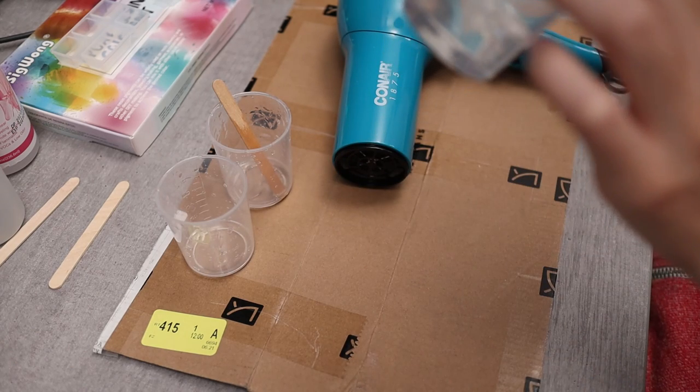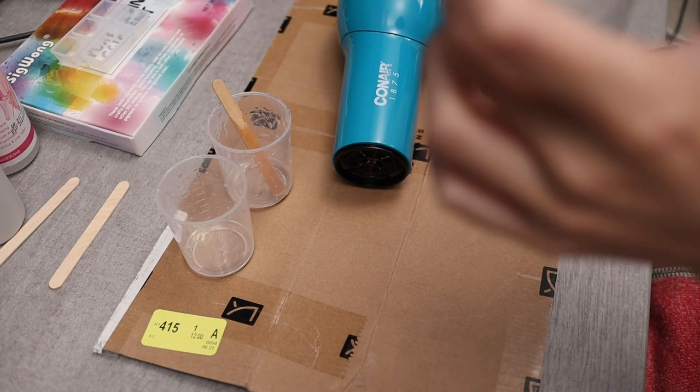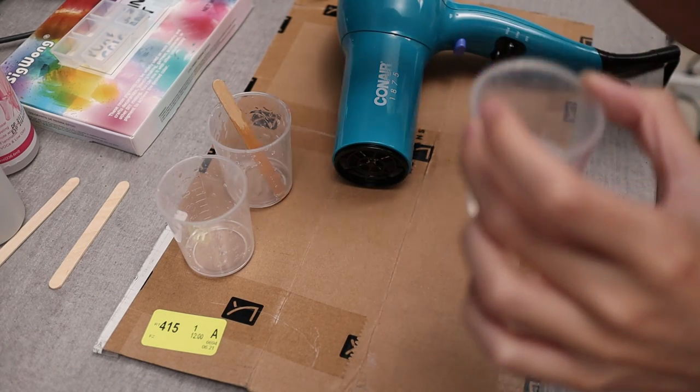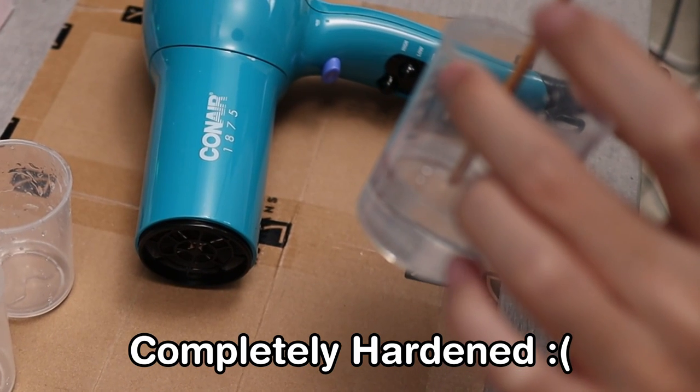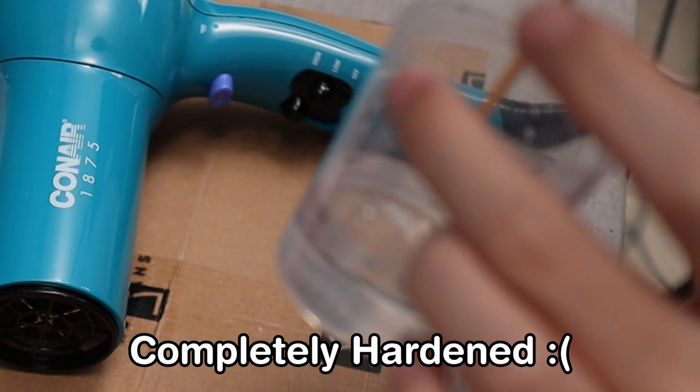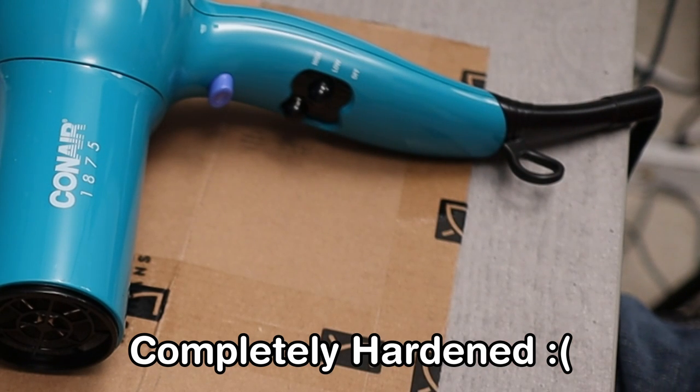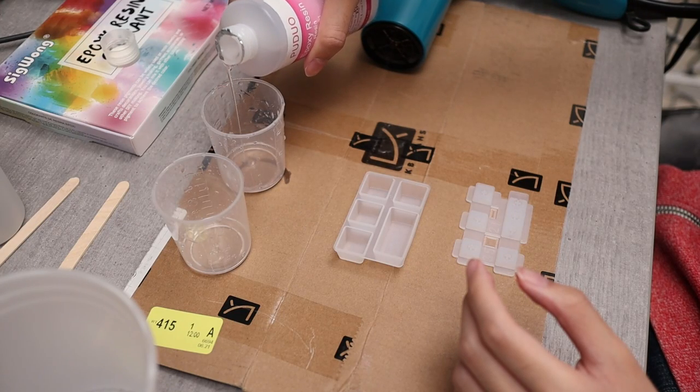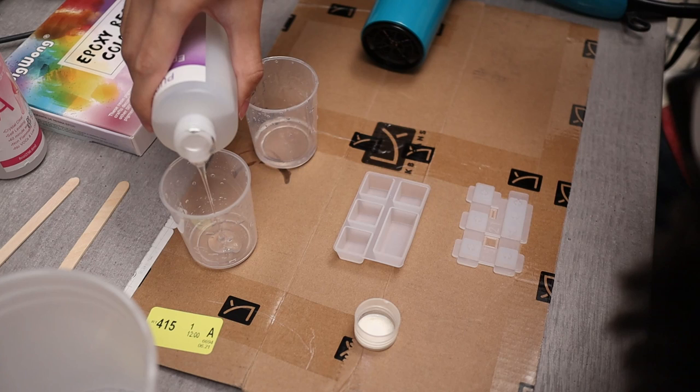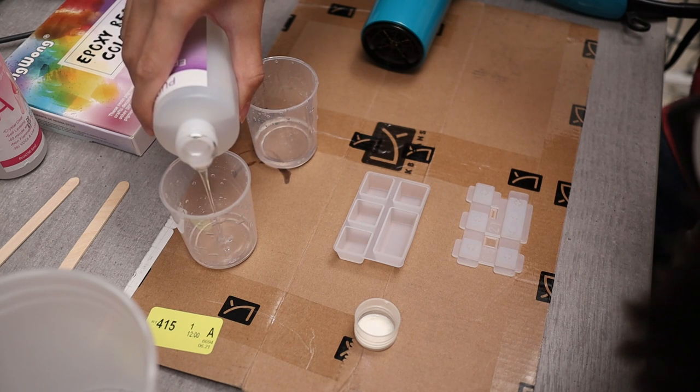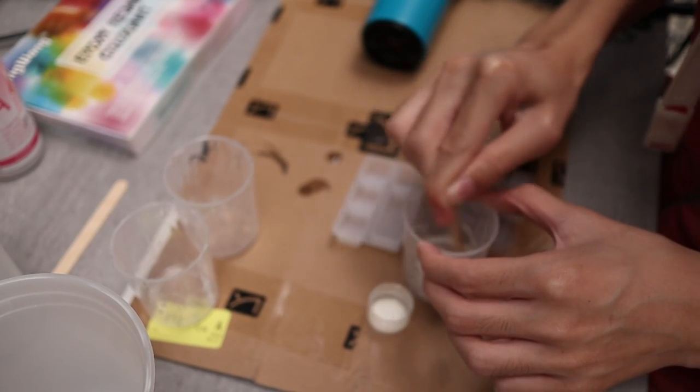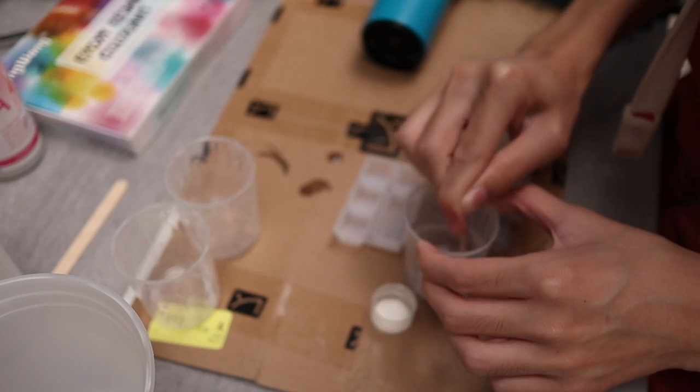Unfortunately, I left it alone for too long and the resin actually hardened inside of the cup, so I had to start it again. This happened because I wanted to get all those tiny little bubbles out, and usually people would use higher heat, or if you really want to get all the bubbles out, you would use a vacuum chamber. But because I'm using a hair dryer, I have to kind of keep my expectations realistic. I'm not going to get all the tiny bubbles out, but I should at least get the larger and more noticeable ones out.